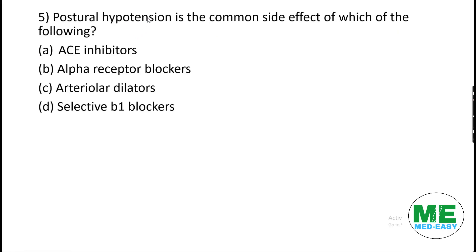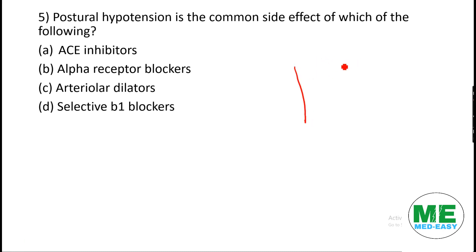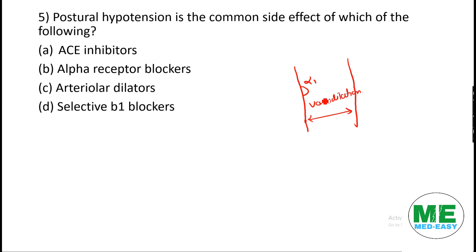Next MCQ: postural hypotension is a common side effect of which of the following drugs? Postural hypotension occurs because alpha-1 receptors are present in blood vessels. When we give an alpha-1 blocker like prazosin, it causes sudden vasodilation, leading to postural hypotension as a side effect. The answer is alpha receptor blockers.